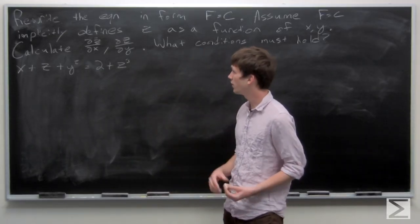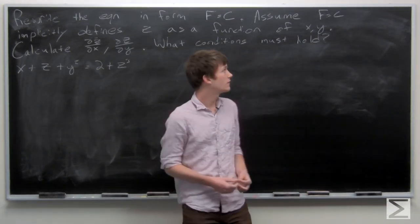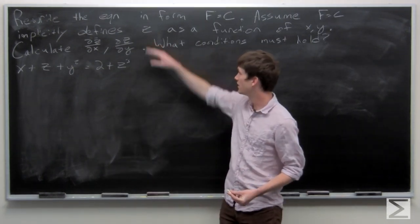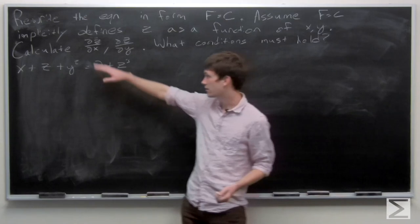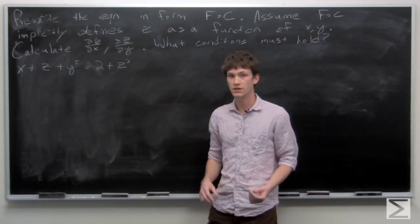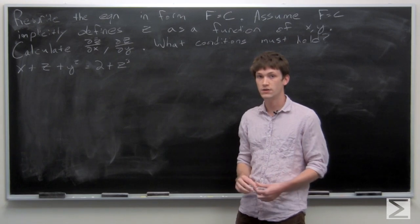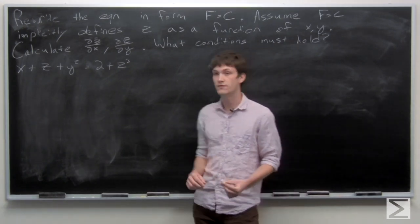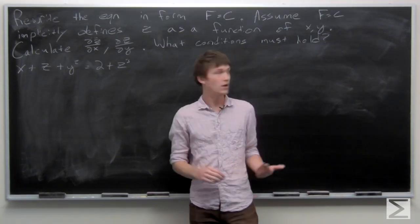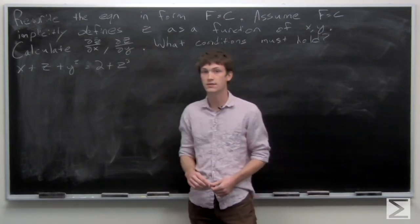In this problem, we're asked to first rewrite our equation in the form f equals c. Then, assuming that f equals c implicitly defines z as a function of x and y, we're asked to calculate the partial derivative of z with respect to x and the partial derivative of z with respect to y. Finally, we are asked to tell what conditions must hold in order for the implicit function theorem to tell us that our equation f equals c actually does implicitly define z as a function of x and y.